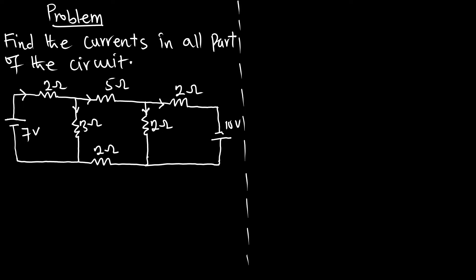In this episode we are going to solve a problem on branch current analysis. The problem says: find the current in all parts of the circuit. We are going to find the current in each branch, and this is quite simple once we follow the branch current analysis approach. First, we have to assign currents or symbols to each branch.